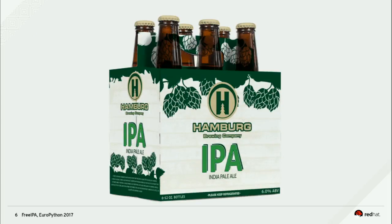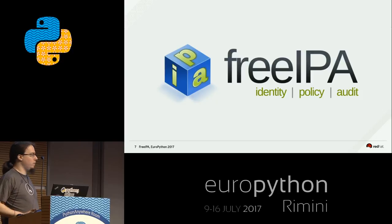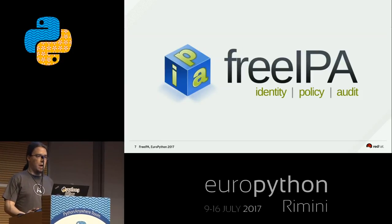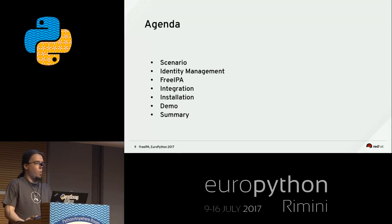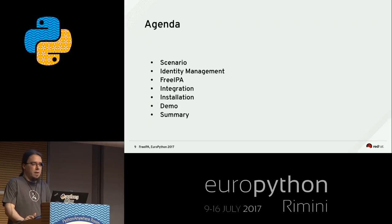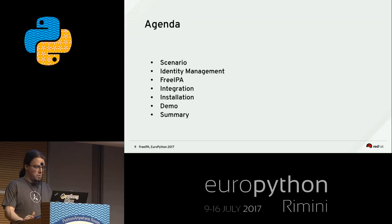FreeIPA — in case you wondered — is not Indian pale ale, so I won't give you free beer in the morning. It's Identity, Policy, and Auditing — an open source stack built of lots of components. The agenda: I'll run through a scenario where you'd benefit from identity management, explain what identity management is, go through the FreeIPA software stack, how to integrate FreeIPA, and then do some demos. Installation won't be shown in full as it takes ten minutes, but I'll show how to integrate it into an HTTP application.